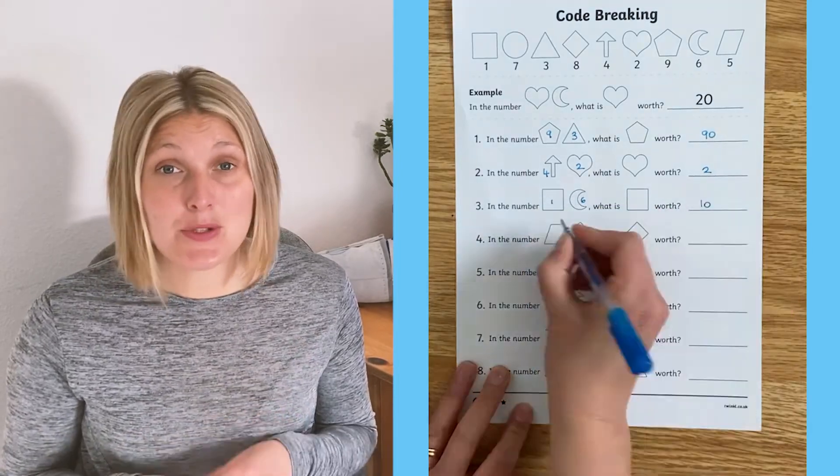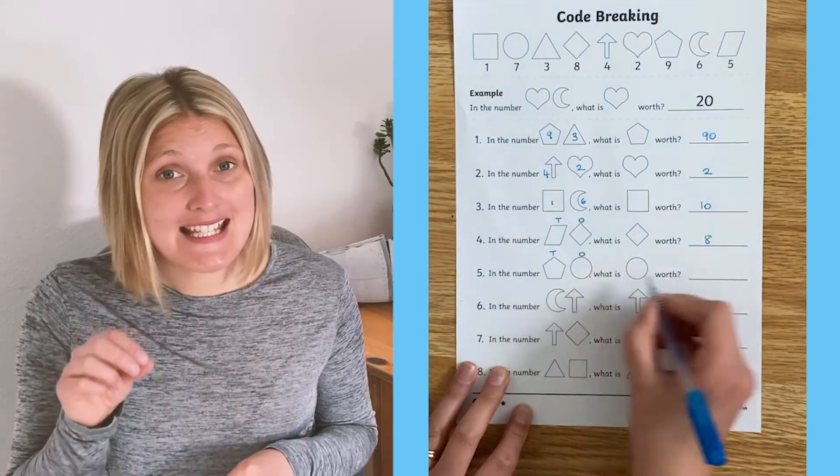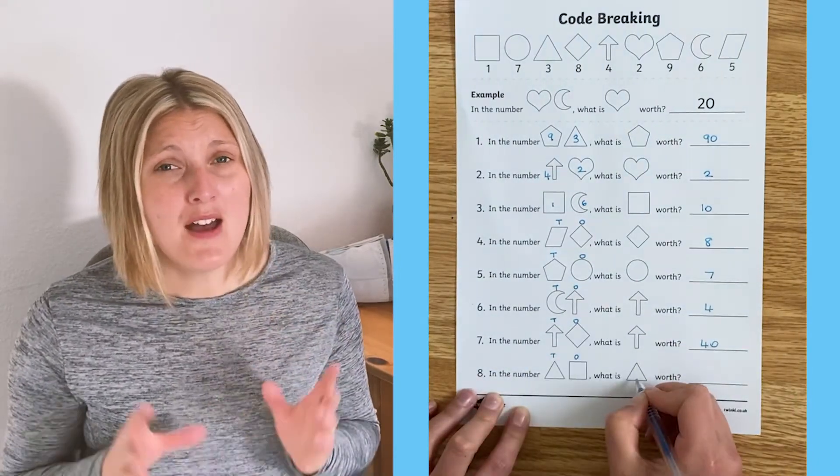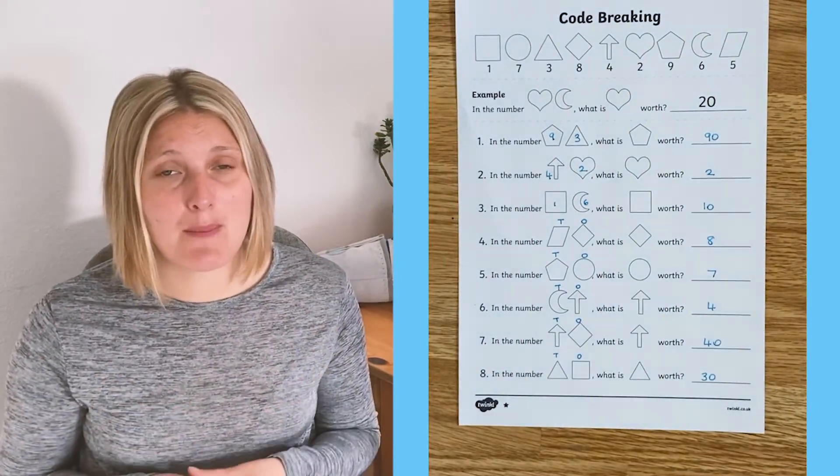You could also get them to write an H, T and O for hundreds, tens and ones above the number, which again will really help them with their place value.